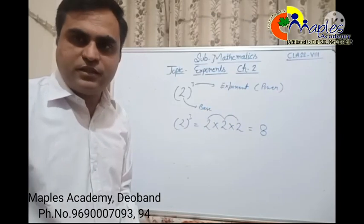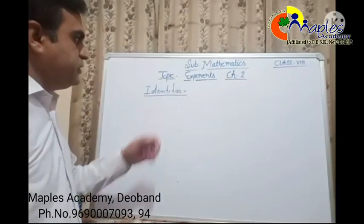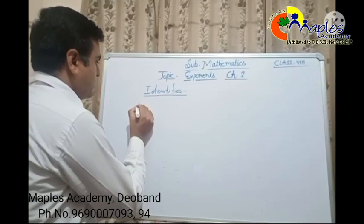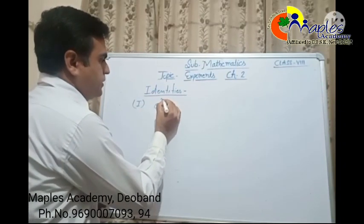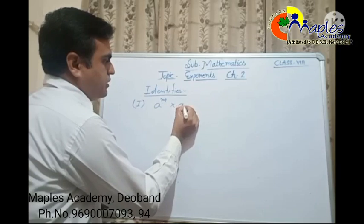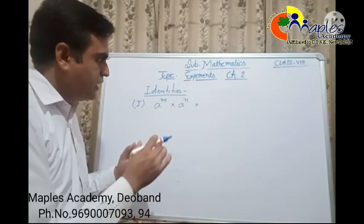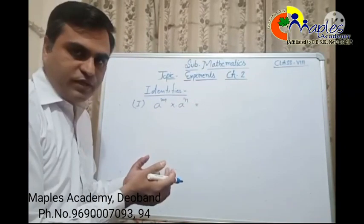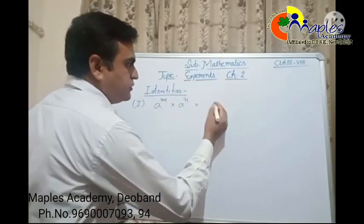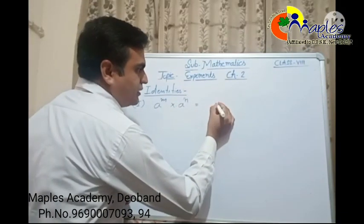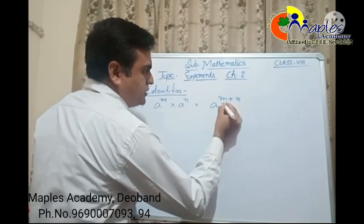Now we understand some identities. The first identity is: if a raise to the power m multiplied by a raise to the power n — if the bases are the same and powers are different and they are in multiplication — then we add the powers, giving us a raise to the power m plus n.